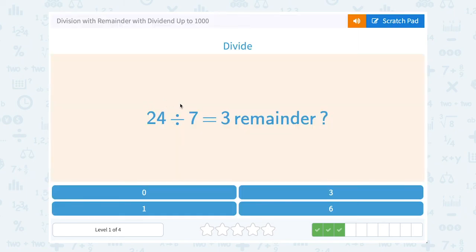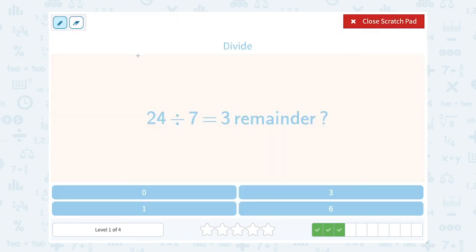24 divided by 7 equals 3 remainder what? If we looked at this problem and said 24 divided by 7, well 7 is going to go into 24 three times. That's what they're telling us.